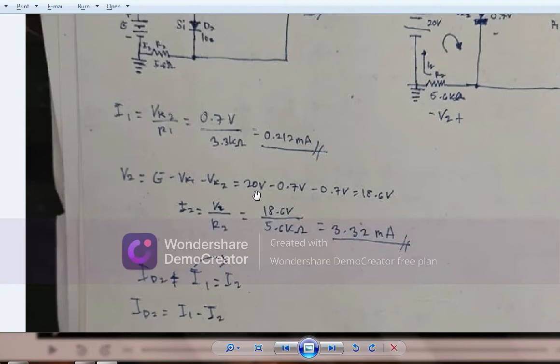So V2 equals 20 volts minus 0.7 volts minus 0.7 volts, which equals 18.6 volts. This is the value of the voltage across R2.